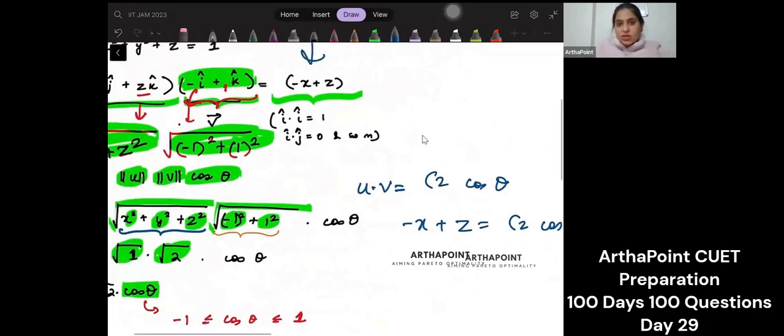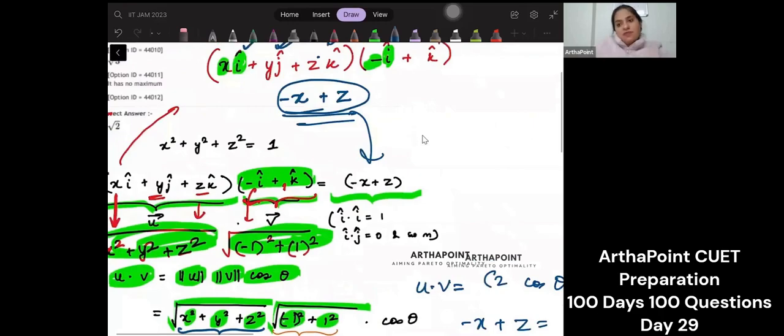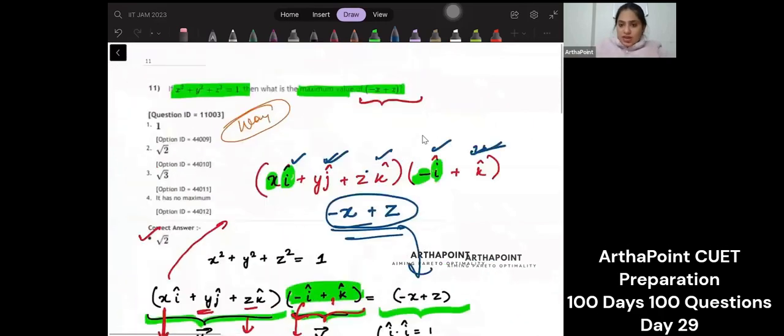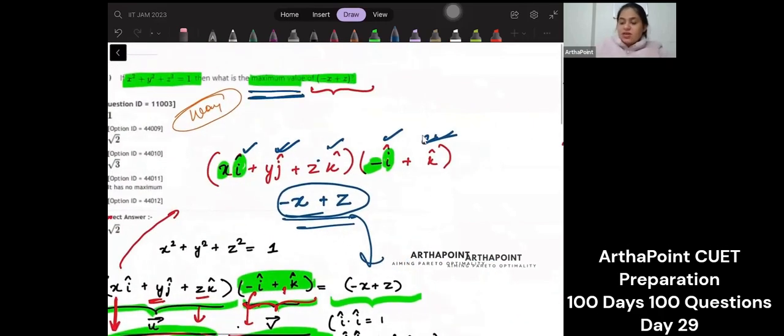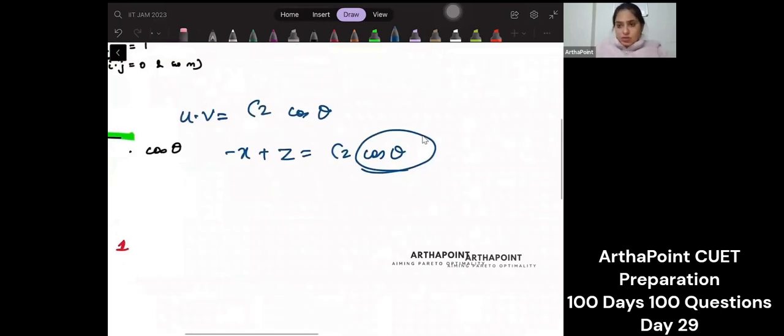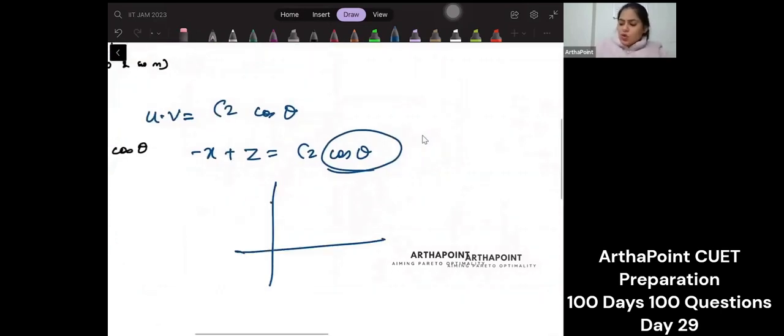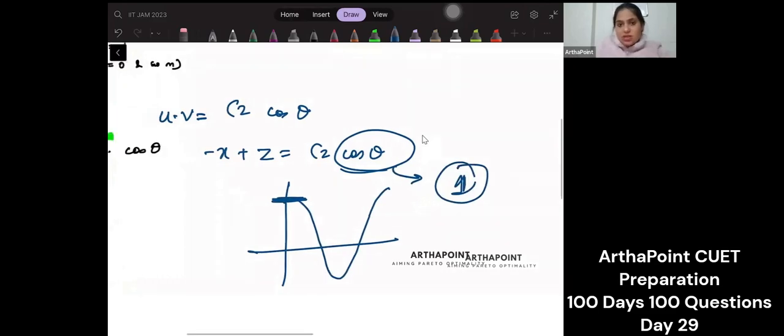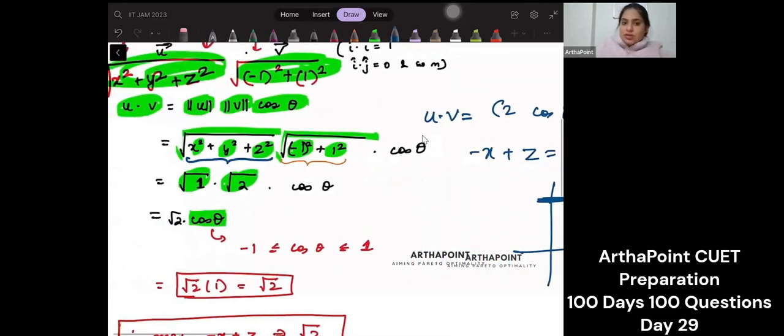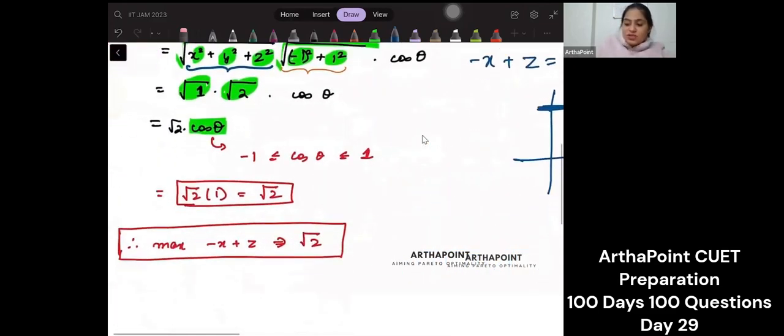Now just think about this. It is asking the maximum value. I know that cos theta, this is a cyclic function, right? Cos theta goes from one to minus one. So the maximum value cos theta can take is one. That's the maximum value of cos theta. So if I put the value, maximum value of cos theta, I will get its maximum value as root two.